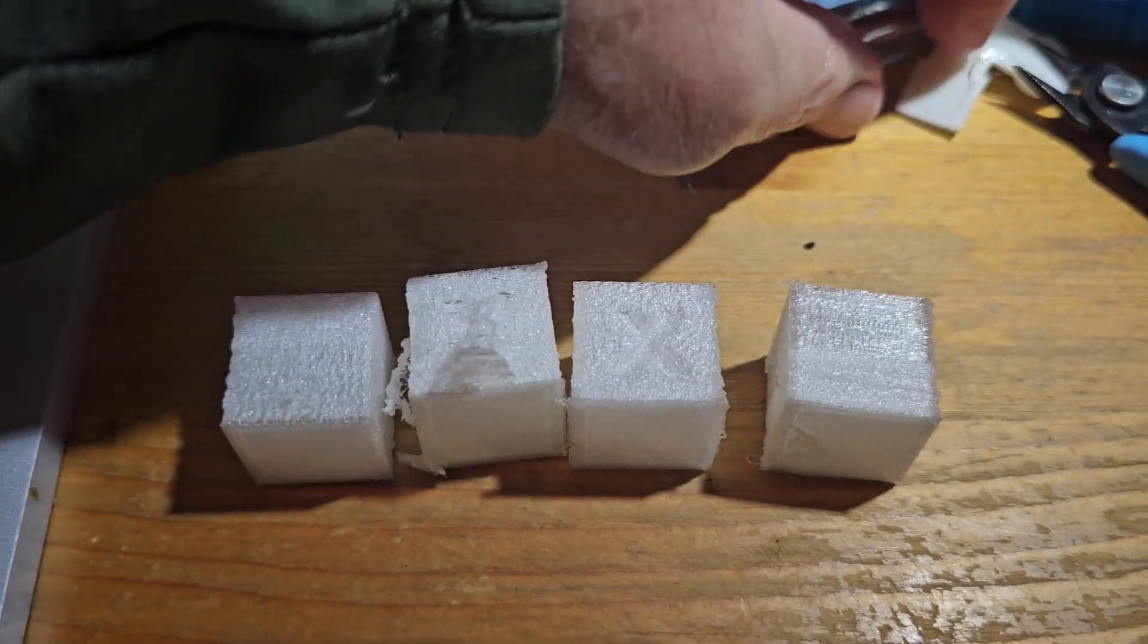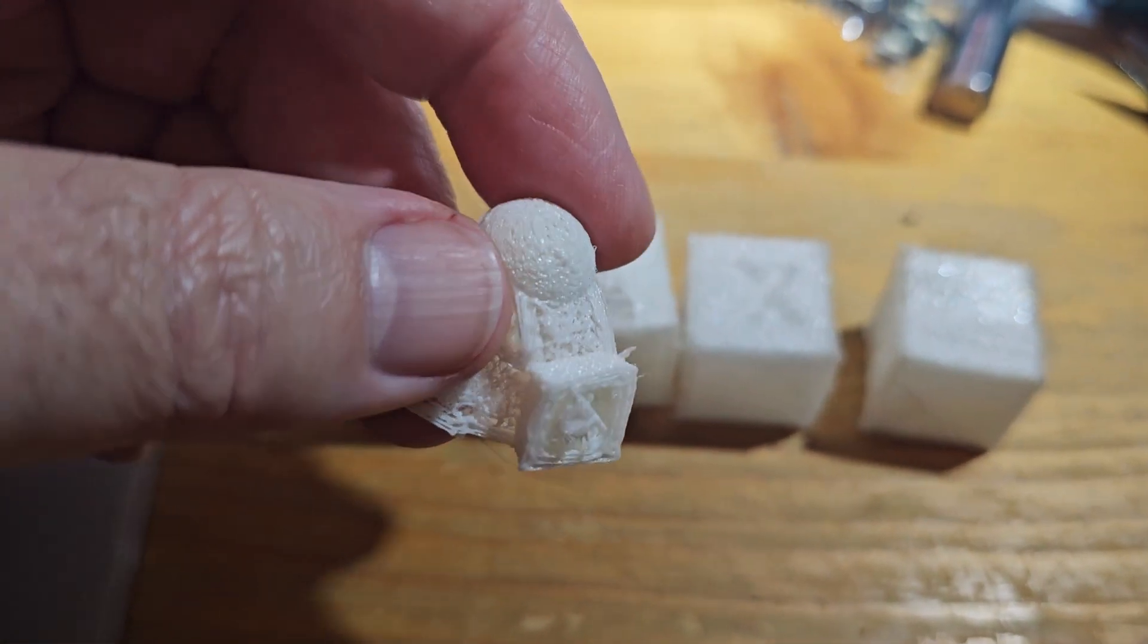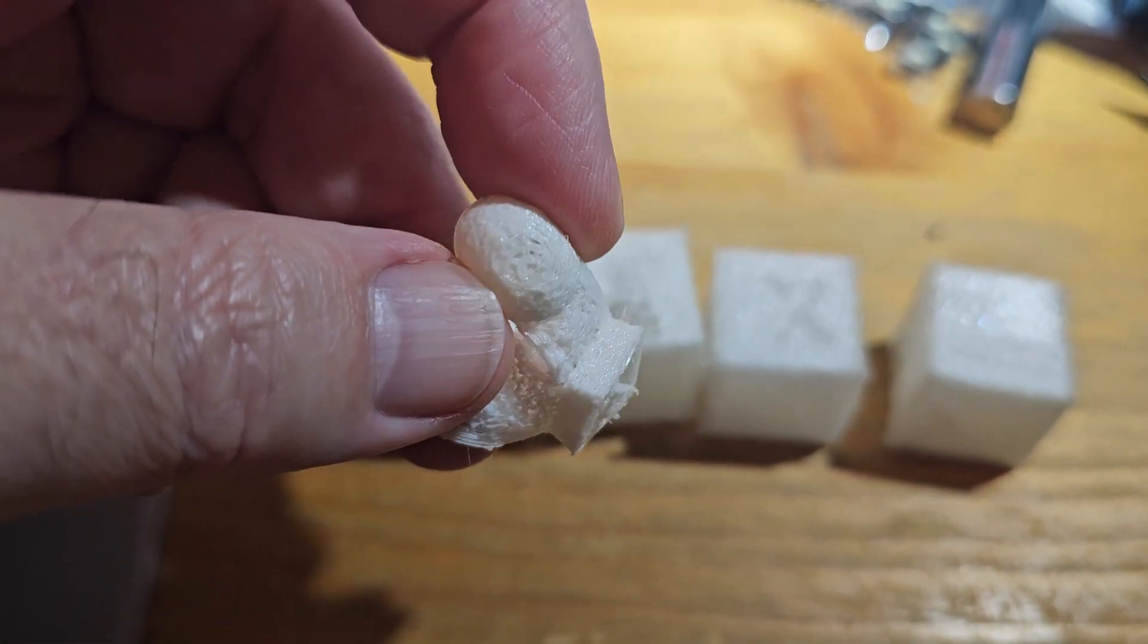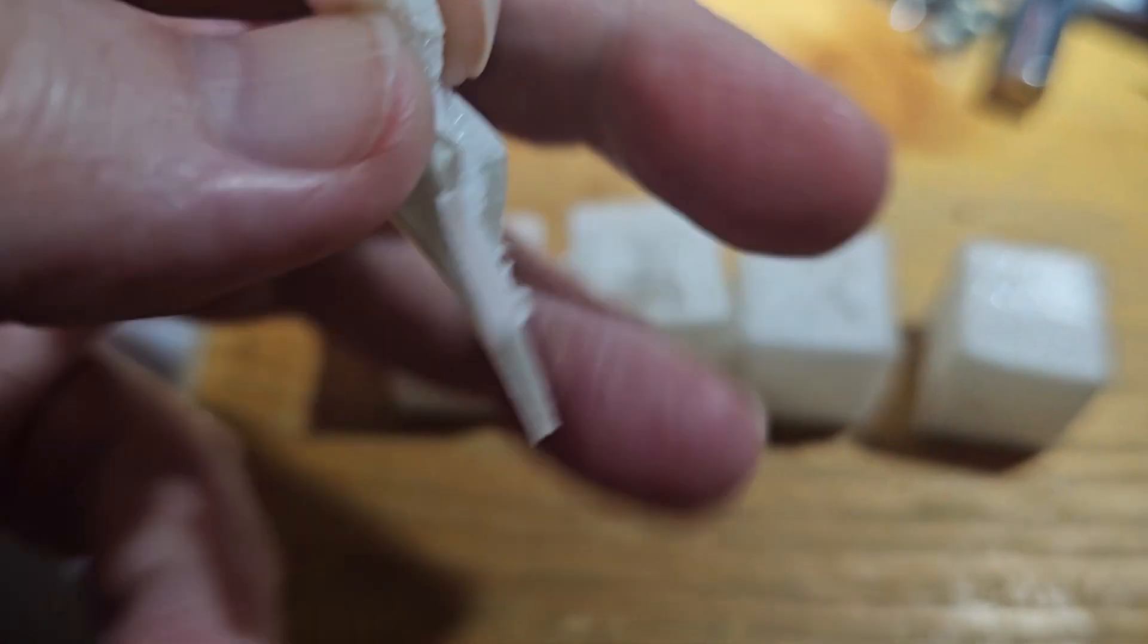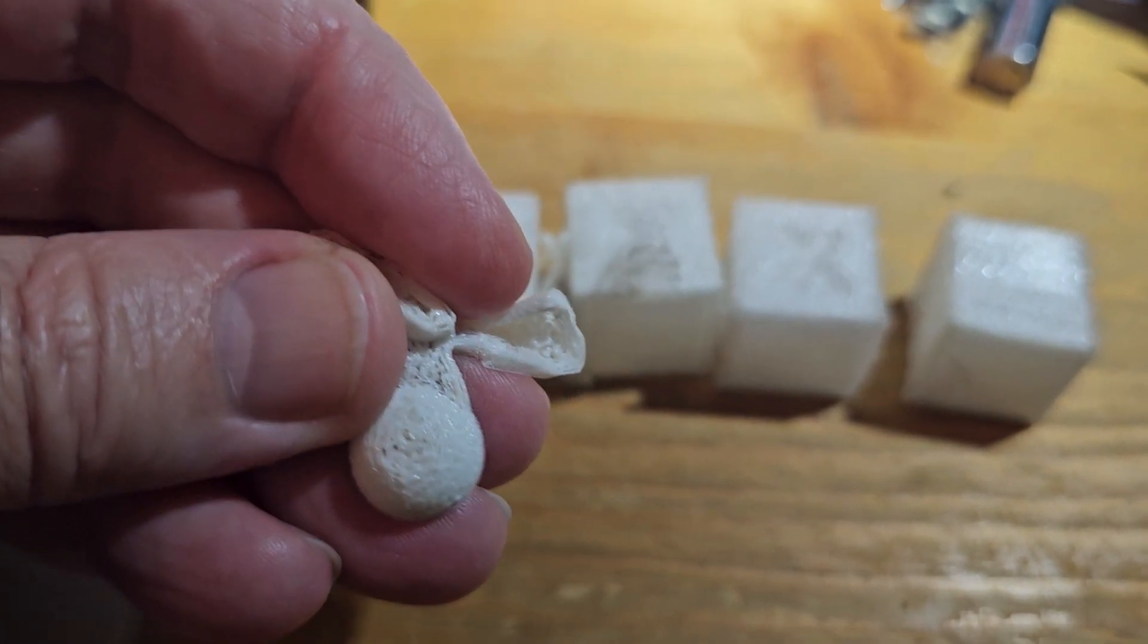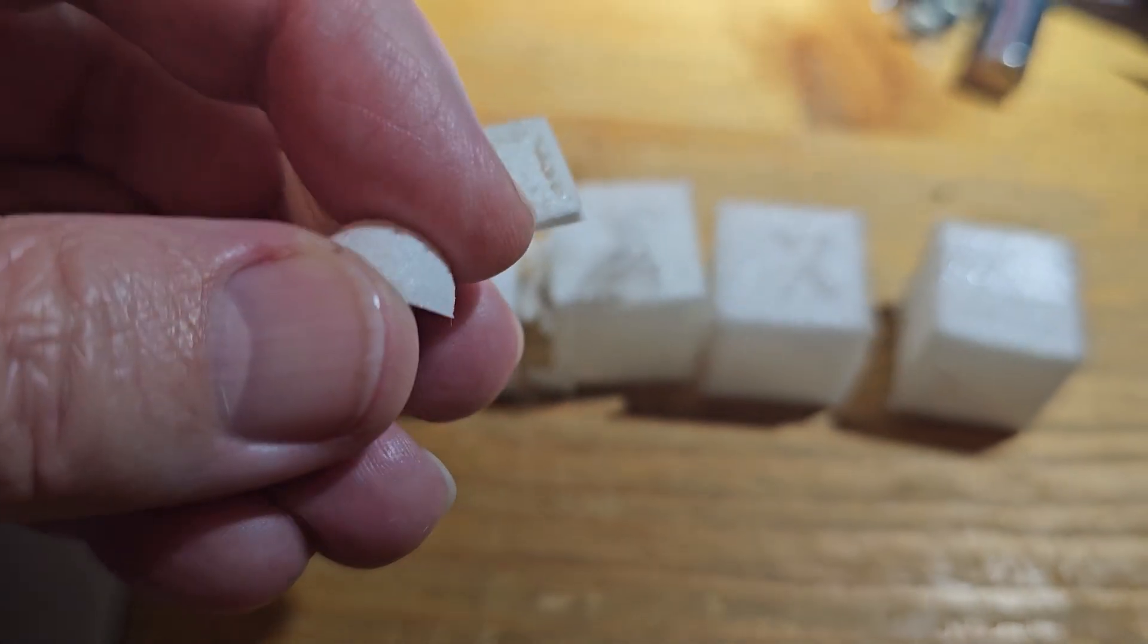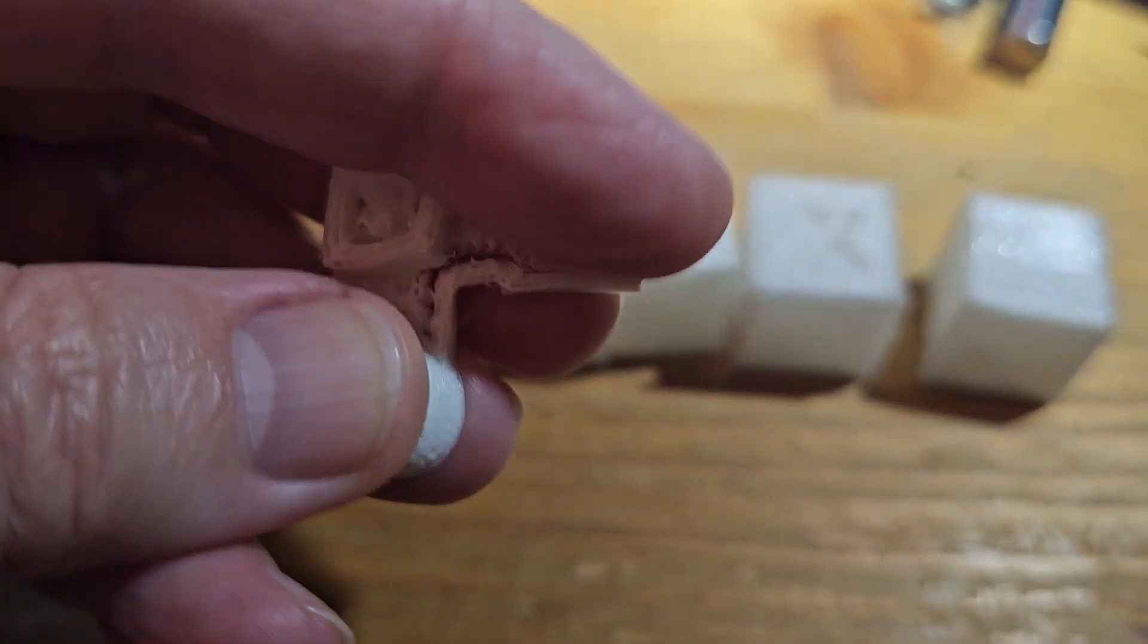These are sponge. These are totally not what it's supposed to be like. Actually, this is 60 TPU, 60A shore hardness, and this is really like foam rubber. This stuff is super stretchy.